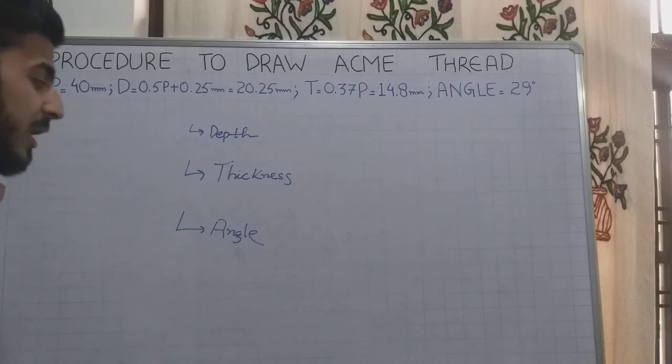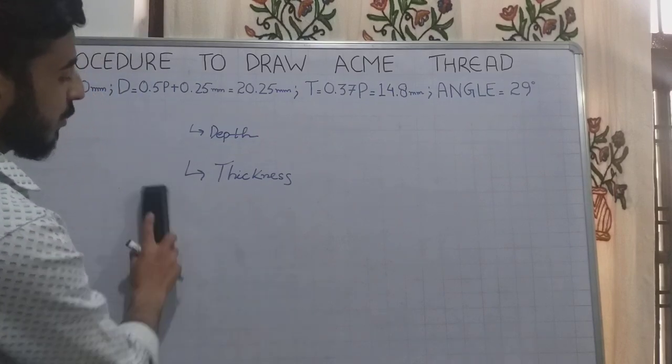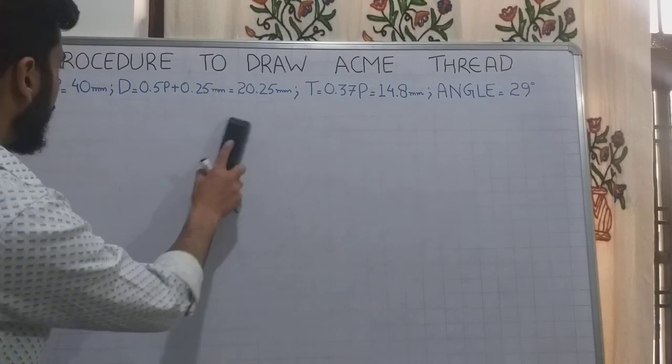Like I have said before, thread angle is the angle between two flanks. For example, I am taking the pitch as 40mm.